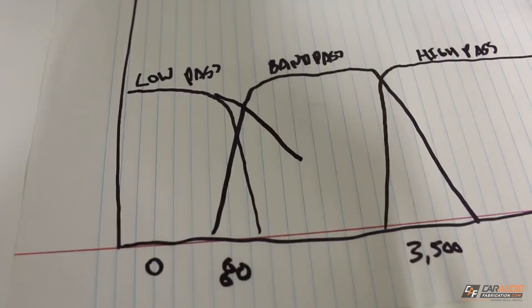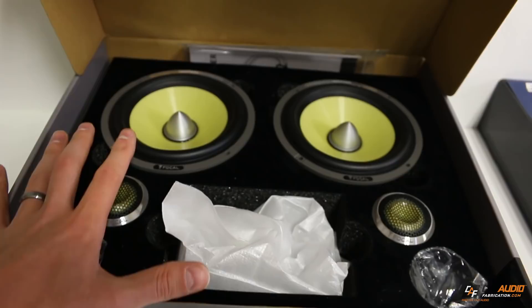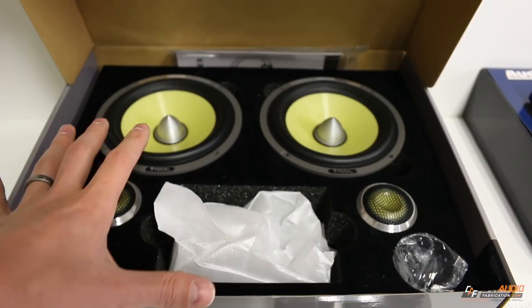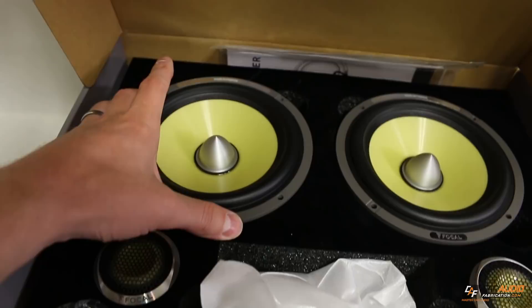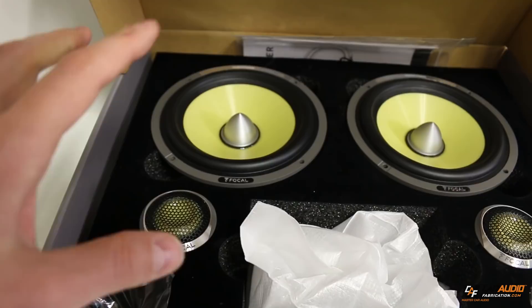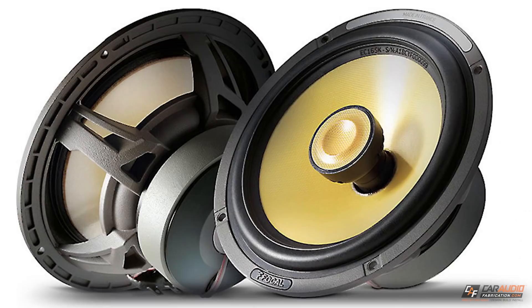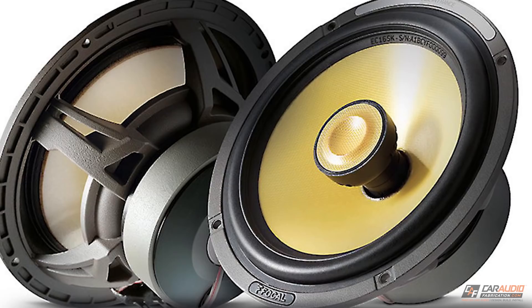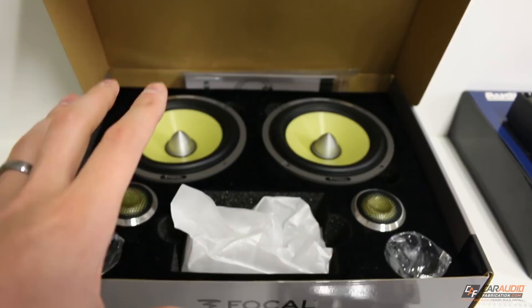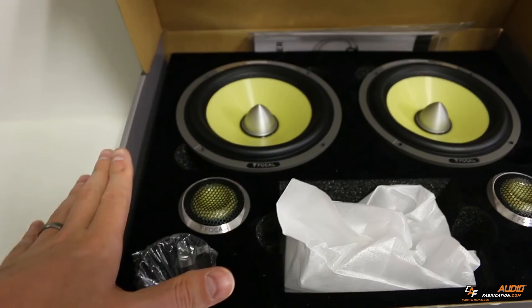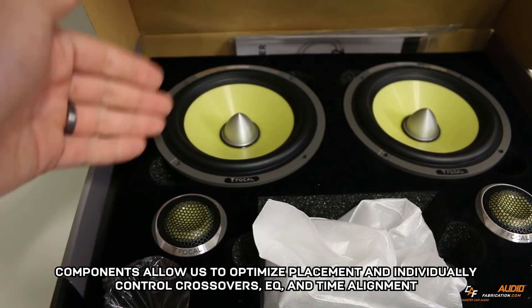Let's go to these speakers here. These are called component speakers. Component basically means that each of the speakers is separate from one another — we have a mid range speaker and a separate tweeter. They are components. The opposite of a component set is a coaxial set. In a coaxial speaker, the mid range speaker is combined with the tweeter into one convenient speaker, giving you one mounting location. That makes it easier to install, but it's not always the best for sound. With component speakers, you don't have a tweeter sitting in the middle of the mid range blocking those sound waves, so you can generally achieve better sound.